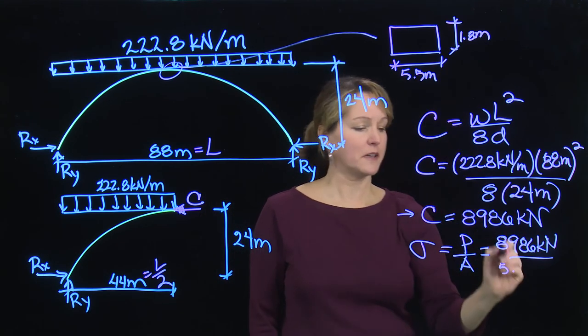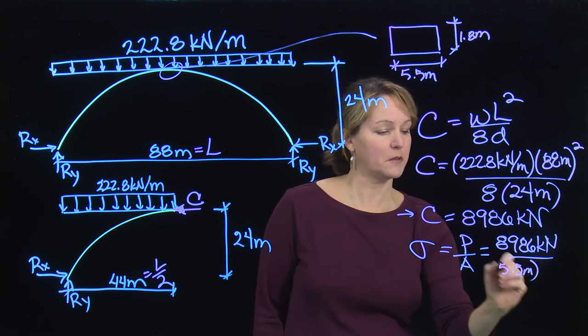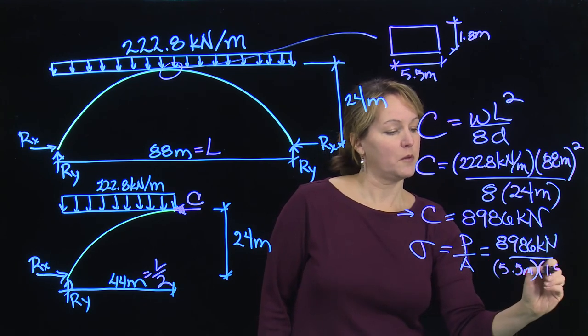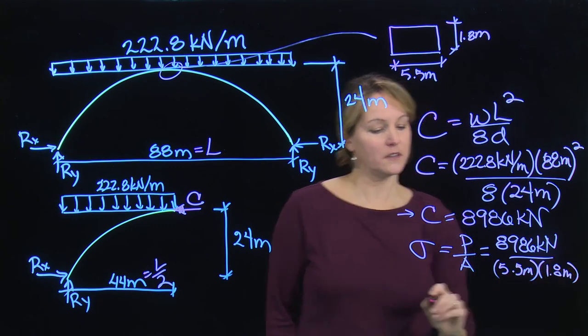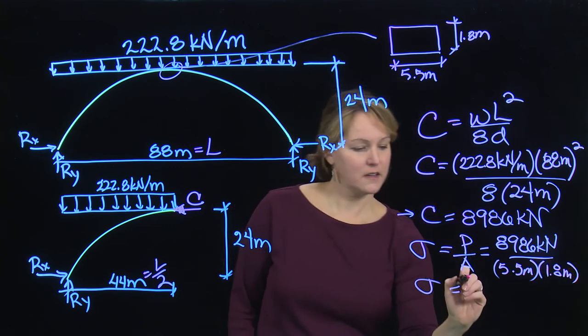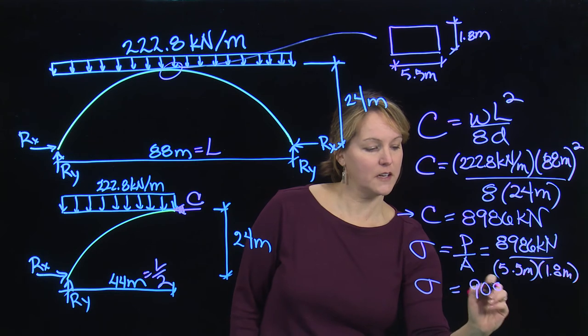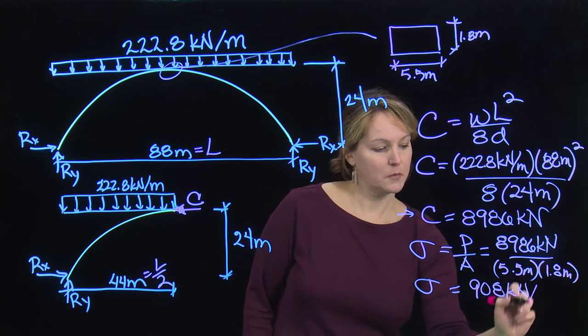That will allow me to compute the cross sectional area. Cross sectional area of a rectangle is just the two dimensions multiplied together: 5.5 meters times 1.8 meters. I can calculate that stress, and that stress is 908 kilonewtons per meter squared.